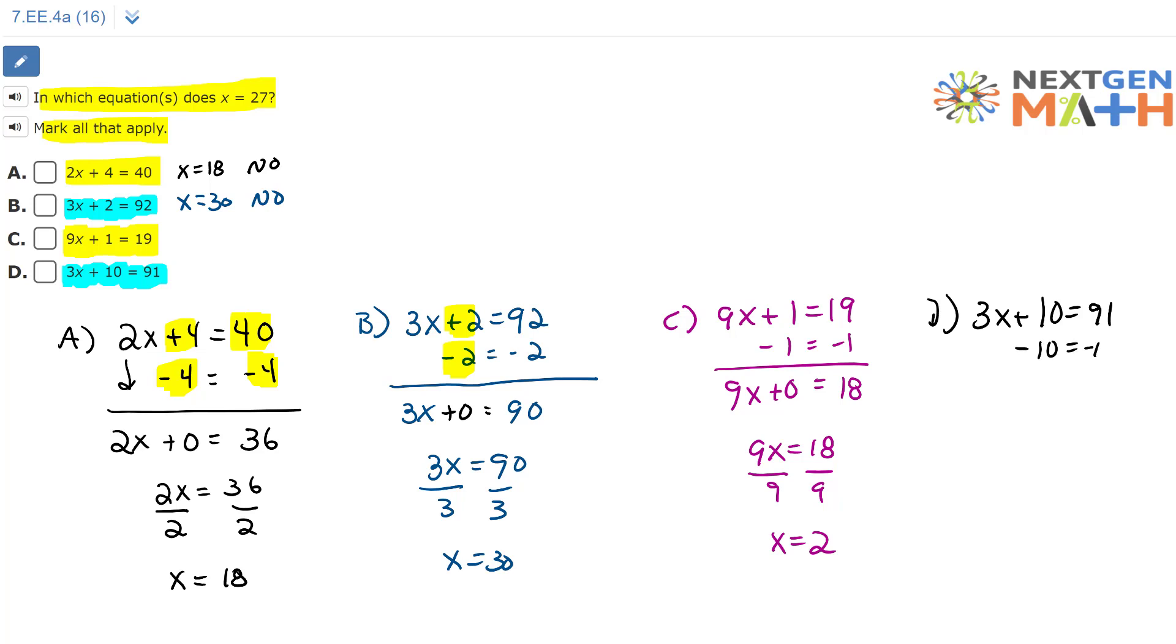Let's subtract 10 from each side. 3x equals 81. Divide each side by 3, and x equals 27. So x equals 27. This is a yes. We'll mark this.